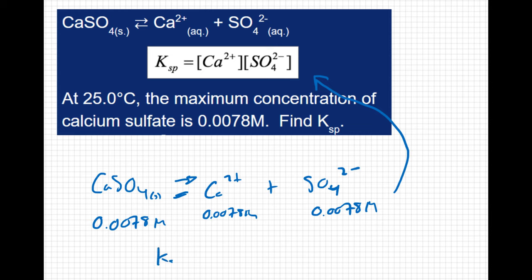And say Ksp is going to equal the concentration of the calcium ion, which is 0.0078, times the concentration of sulfate, which is 0.0078, or 0.0078 squared, which equals 6.1 times 10 to the negative 5.